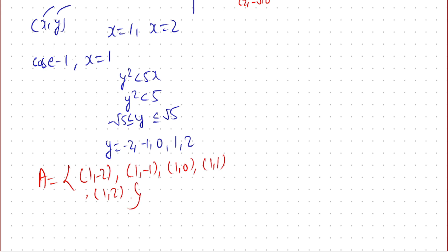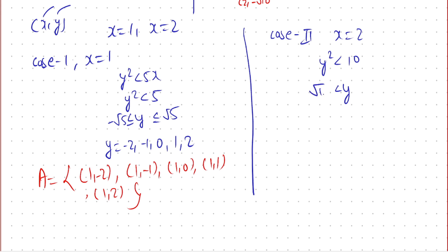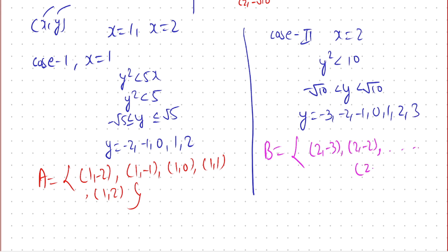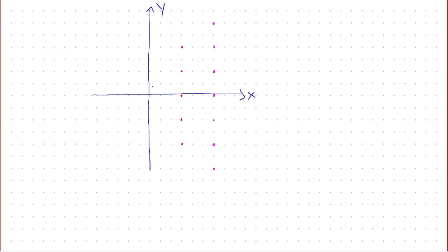For Case 1 we get the set of lattice points, denoted Set A. For Case 2, x = 2: then y² < 10, so y lies between −√10 and √10. Since y is an integer, y can be −3, −2, −1, 0, 1, 2, or 3. For Case 2, we get the set of points denoted Set B. Plotting all points from Set A and Set B, we have a total of 5 + 7 = 12 integer lattice points in set X.